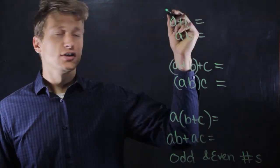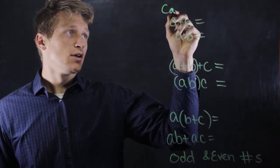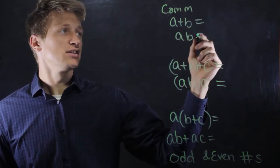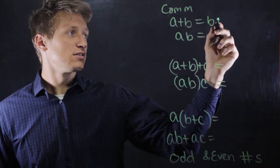So for example, we have the commutative property, which says that if we add a to b, we get the same result as if we were to add b to a.